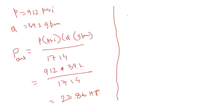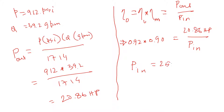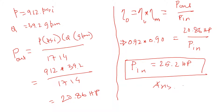Now calculating input power. Overall efficiency equals volumetric efficiency × mechanical efficiency, or equivalently output power divided by input power. With η_V = 0.92 and η_M = 0.9, and output power of 20.86 HP: input power = 20.86 / (0.92 × 0.9) ≈ 25.2 horsepower. That is the answer to question B.